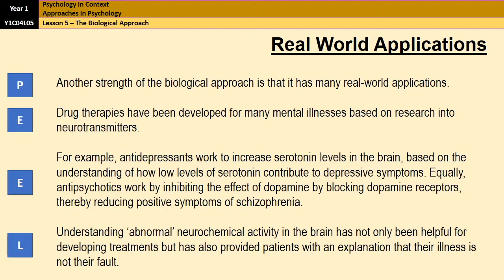Finally, you have a strength: real world applications. The biological approach has been heavily involved in the development of antipsychotic drugs and antidepressants because of their research into the impact of serotonin and dopamine on behaviour. Because they've been able to research those things, it has led to the development of drugs that have been hugely influential in helping people who suffer from depression and schizophrenia. So it's been very helpful for developing treatments, giving it a very strong real world application. Those are three evaluation points, though you may want to add a fourth if pushing for very high essay marks.